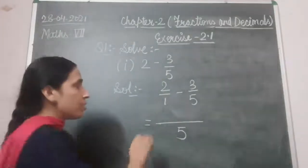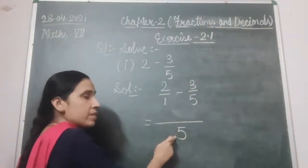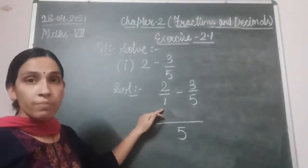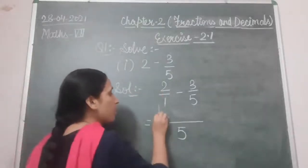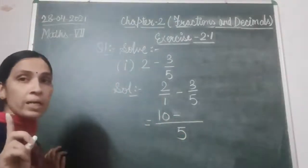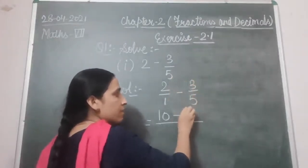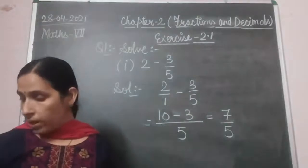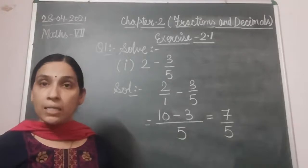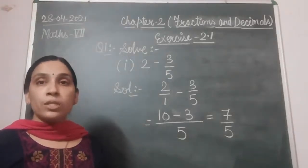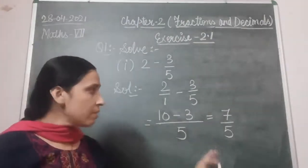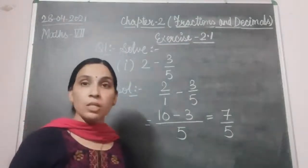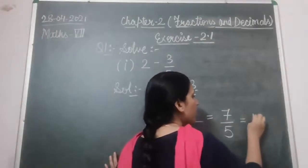5 divided by 5 gives 1, and 1 multiplied by 3 gives 3. So 10 minus 3 equals 7/5. Since 7/5 is an improper fraction, it must be converted to mixed fraction. 5 ones are 5, remainder 2. So the answer is 1 and 2/5. Remember QRD — Quotient, Remainder, Divisor — whenever converting from improper to mixed fraction.